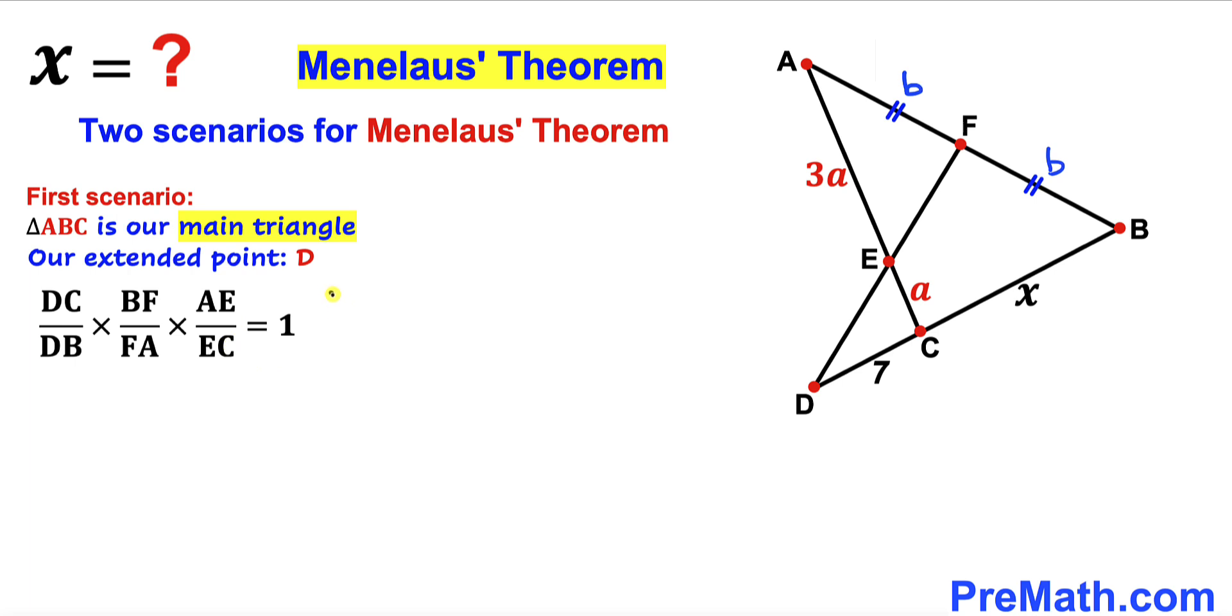Now let's go ahead and fill in the blanks in this formula. In our case DC is 7, so let me write down 7 divided by... and then we're going to have D goes to B. So therefore we're going to have 7 plus X. So I can write X plus 7.